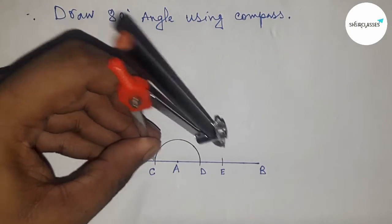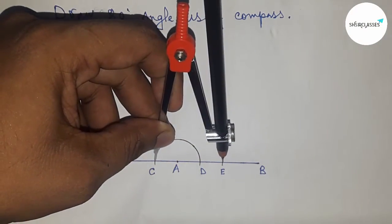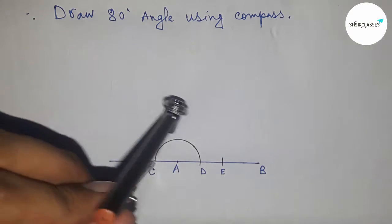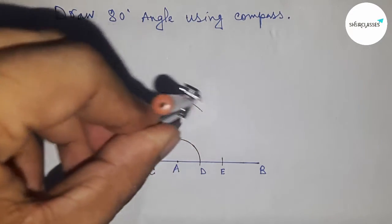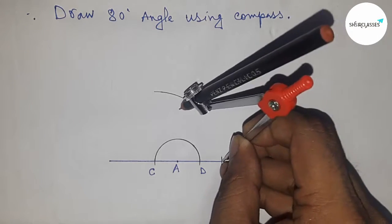And draw an arc here. With the same length, put the compass on point E and cut the arc this way.